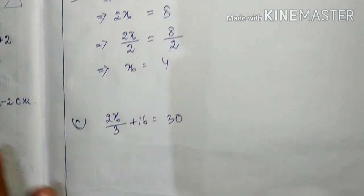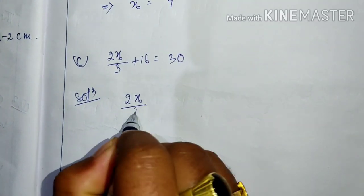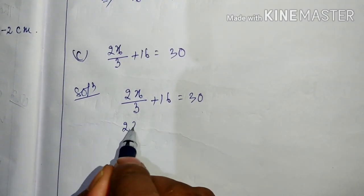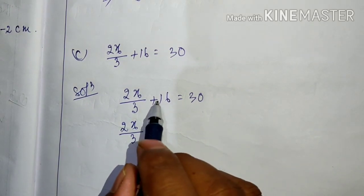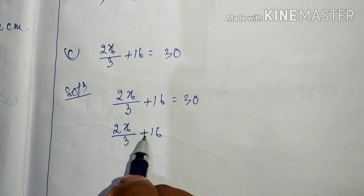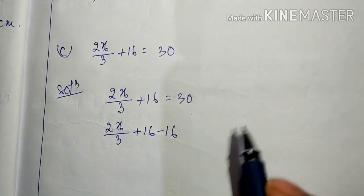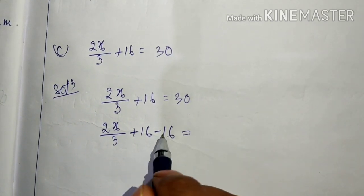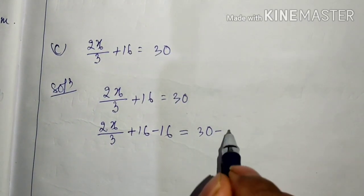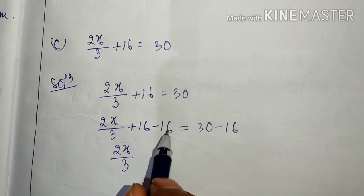We finish solving question number 5a. Now let me solve question number 5c. Write the solution — the equation has 2x/3 plus 16 equals 30. We need to remove this plus 16 first. Put minus 16 so it cancels. On the other side, 16 minus 16 is 0, giving 2x/3. On the right, 30 minus 16 is 14.